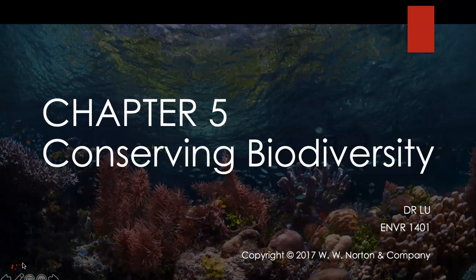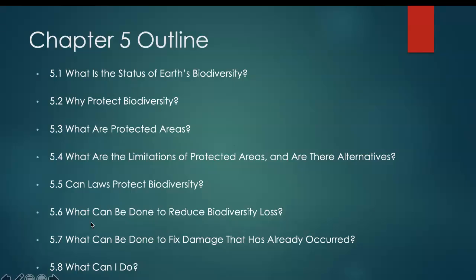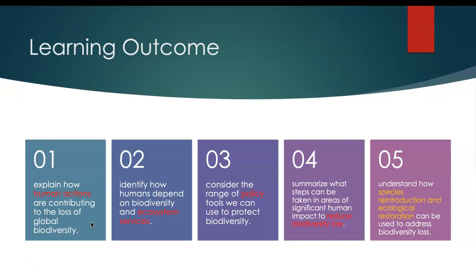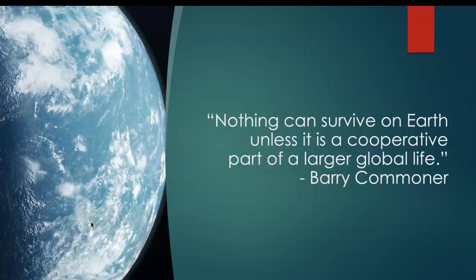Chapter 5. We are going to talk more about what we can do about biodiversity after understanding some of the concepts in Chapter 4. After this chapter, you'll be able to explain how human actions cause the loss of global biodiversity, the value of ecosystem services, how we can use policies as tools to protect biodiversity and reduce biodiversity loss. Finally, I have a good exercise for you to understand how reintroducing species can restore the whole entire ecosystem.